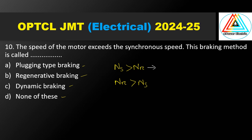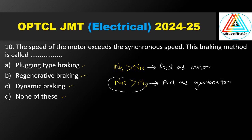The motor normally runs below synchronous speed. But when the rotor rotates above synchronous speed, the machine acts as a generator. When it acts as a generator, the energy is fed back to the supply — this is called regenerative braking. The correct answer is option B, regenerative braking.